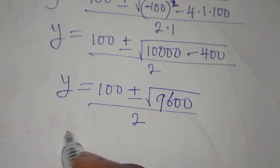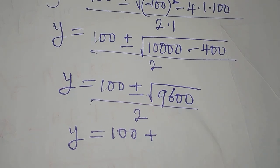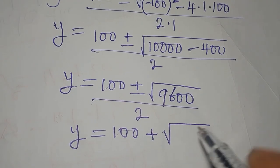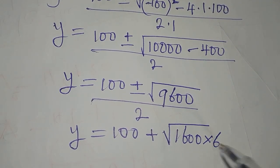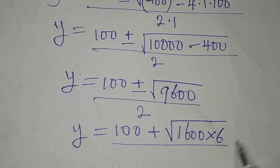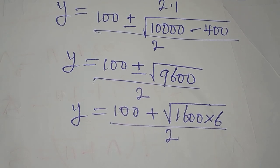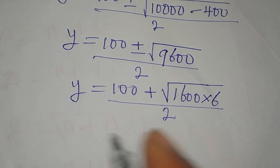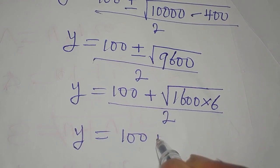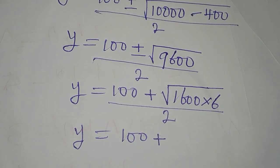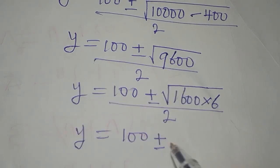Our target is to break the square root of 9,600 into a simpler form. 9,600 is the same as 1,600 multiplied by 6, all over 2. We use this because 1,600 is the highest perfect square that is a factor of 9,600. Proceeding, y equals 100 plus or minus the square root of 1,600, which is 40, times root 6.